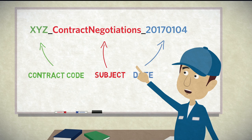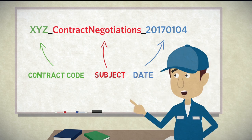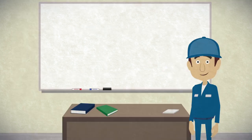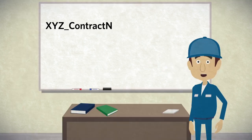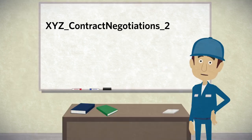Simple, effective, and specific. You need only glance at the file name to know what the document is about and which is the most recent. Don't worry if you don't have a contract code — just start with the subject and the date, and be as specific as you can.